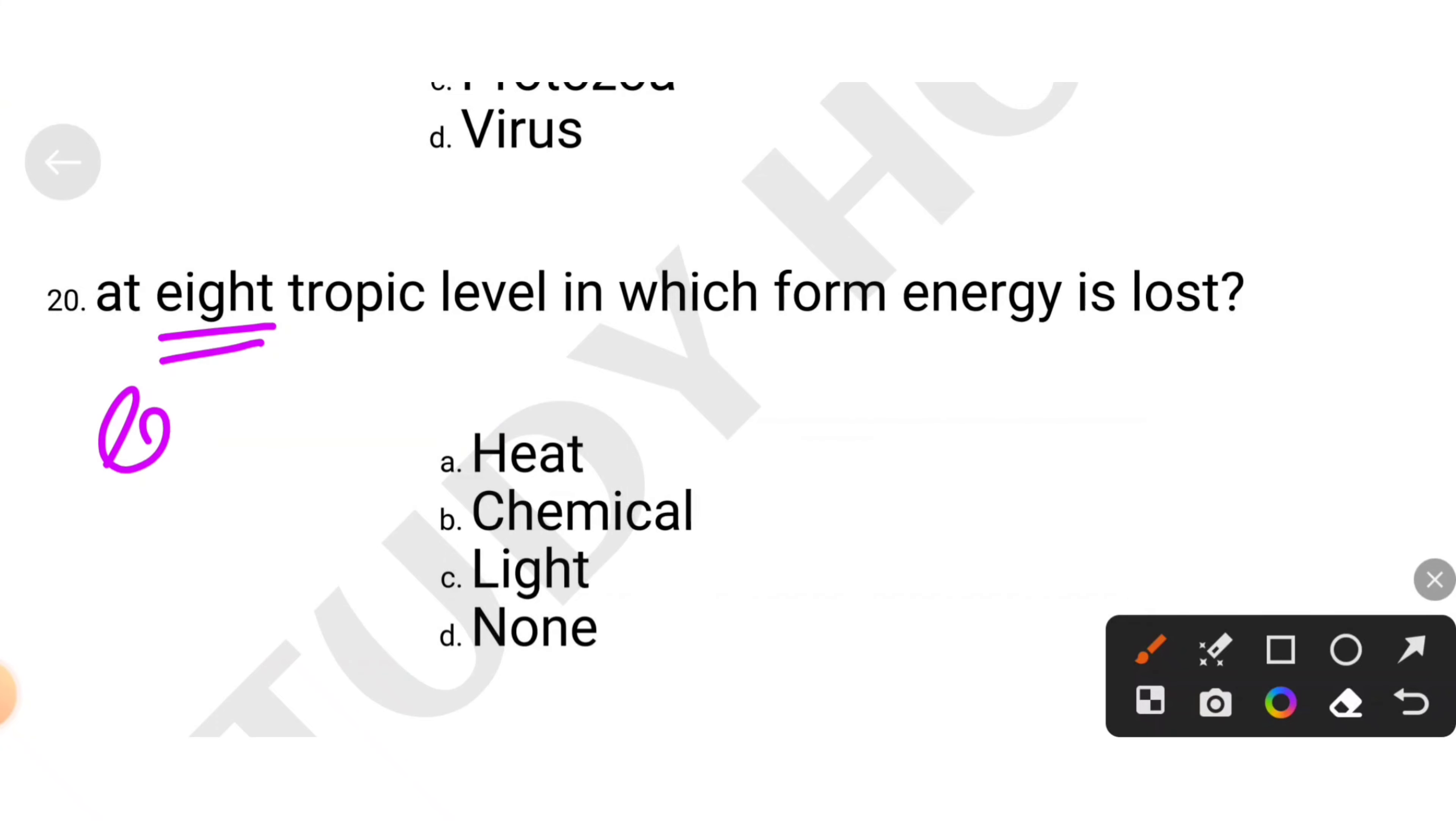At each trophic level, in which form energy is lost. Every one of the trophic levels, which energy is lost. Heat, chemical, light, or none of these. So heat energy is lost.